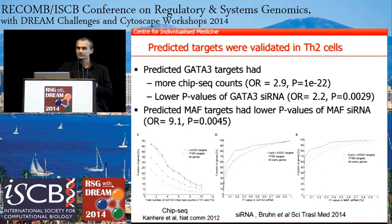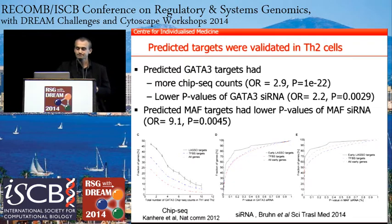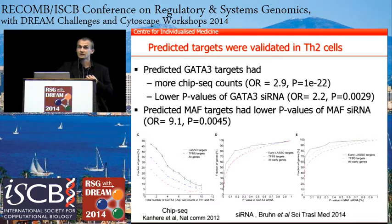We also asked whether the predicted edges are functional. Our group performed siRNA knockdown of GATA3 and MAF in TH2 polarization, followed by siRNA microarrays. We found that our predicted edges generally had lower p-values than the remaining edges, suggesting that our predicted interactions are functional — at least for GATA3 and MAF. We couldn't find TH2 or TH1 relevant data for MYB.